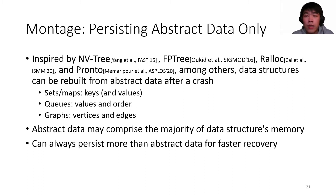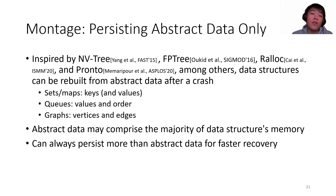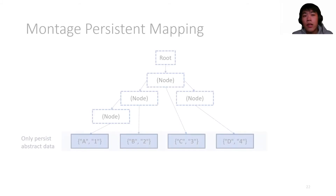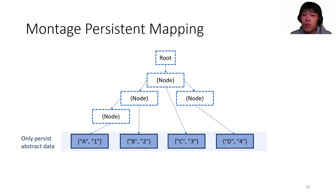For a mapping, for example, this can be a linked list, a hash map, or a tree. In many target applications like in-memory databases, abstract data can take the majority of the data structure's memory usage, which makes this strategy preferable when using NVM since it tends to be much larger than DRAM. Note that abstract data is just the minimum set of information to be put into persistent payloads — Montage users can always persist more data for faster recovery after crashes. This is an example of a Montage persistent mapping implemented as a tree, where the dark blue blocks represent persistent payloads containing abstraction-related information. With only those blocks after crashes, the upper transient indexing structure can be rebuilt.